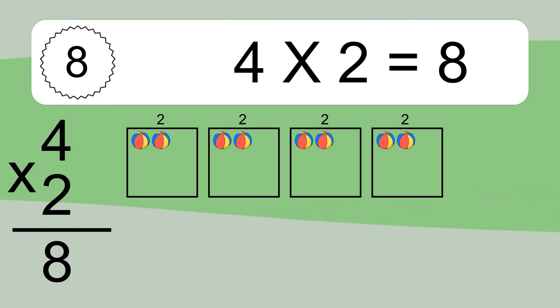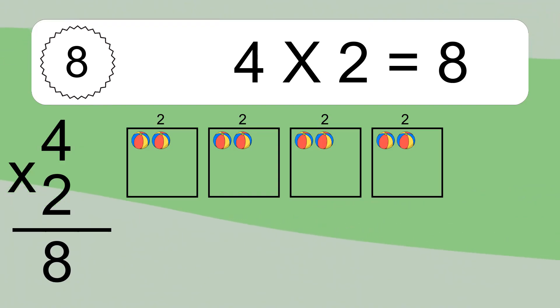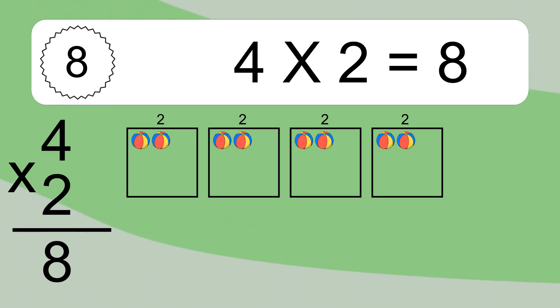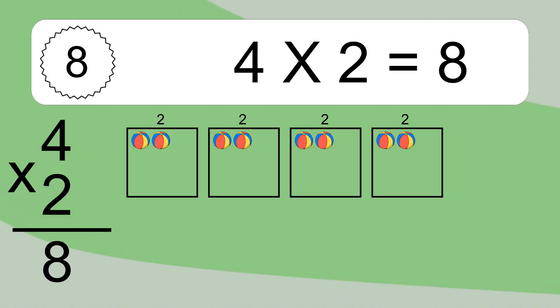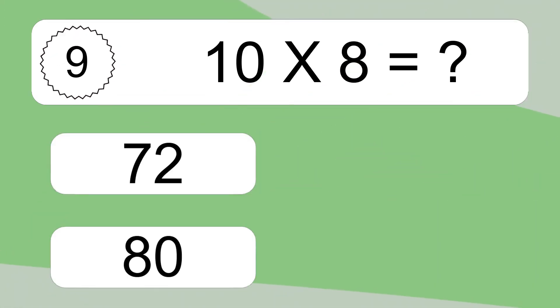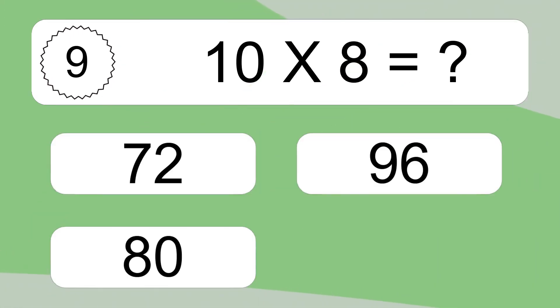We have 4 boxes, and each box has 2 colorful balls inside. If you count all the balls in all the boxes together, you will have 4 times 2 balls. This equals 8 balls.